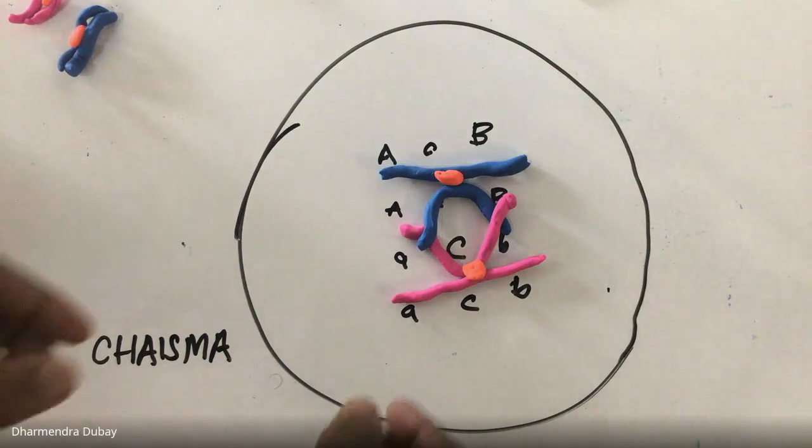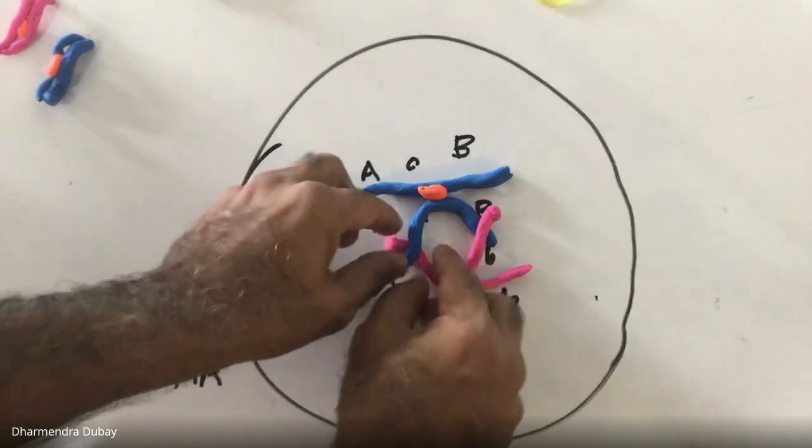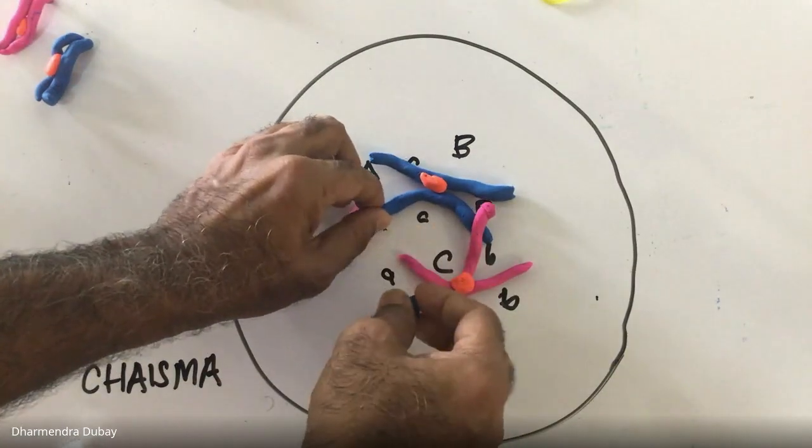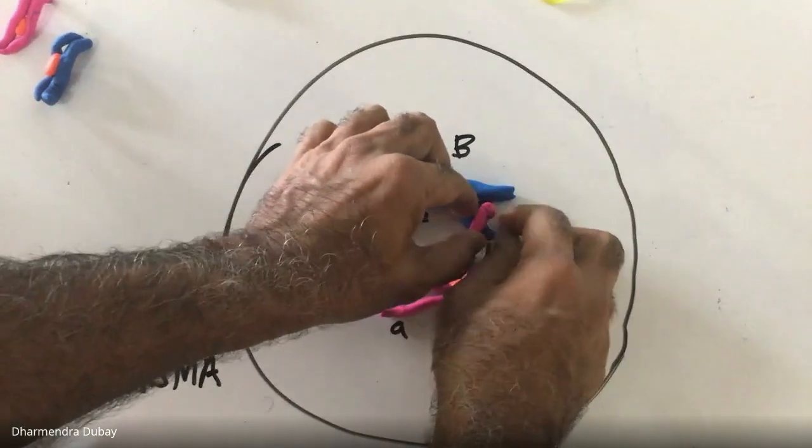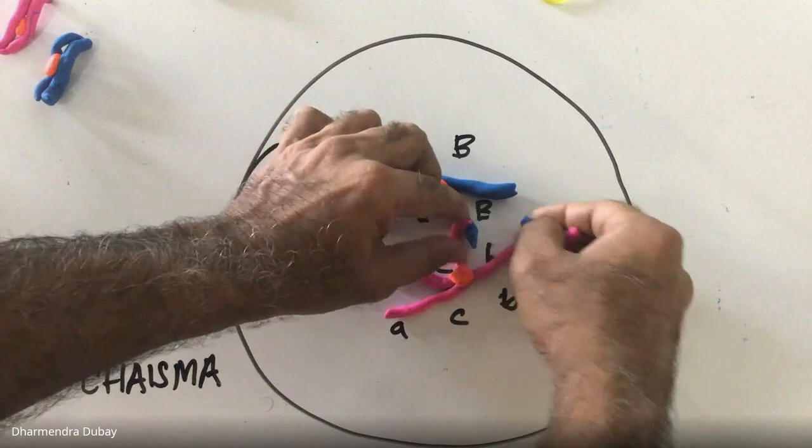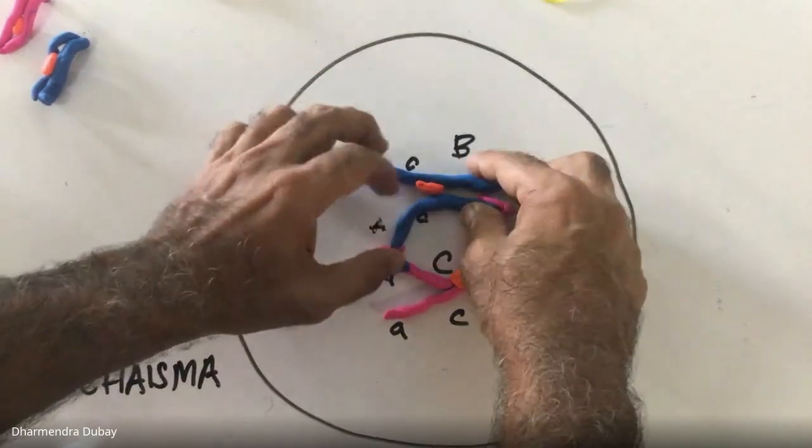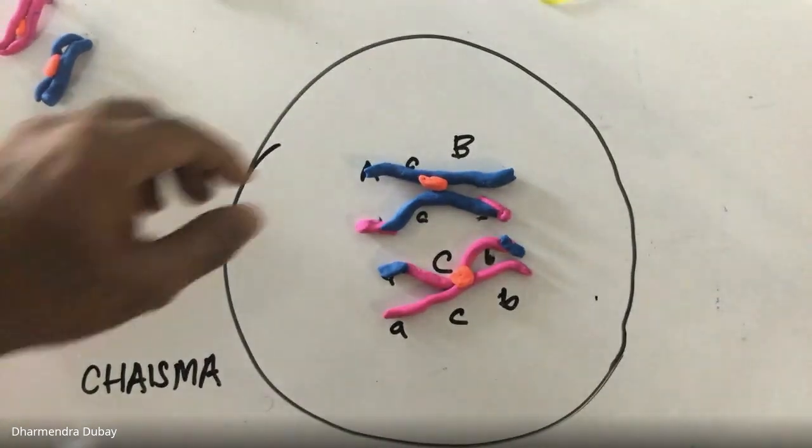That is called a chiasma, a crossover point. Once this kind of crossing over is happening, what's going to happen next is this piece is going to break, the blue piece is going to break and it's going to join with the pink. So what you have now is a new combination of genes altogether.